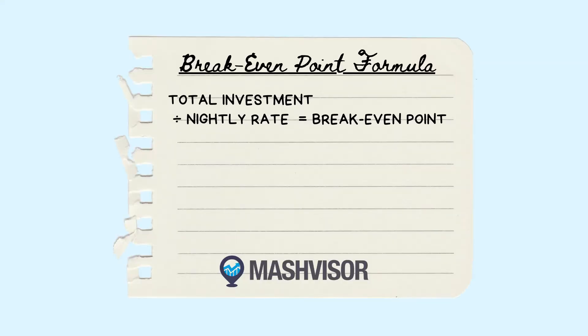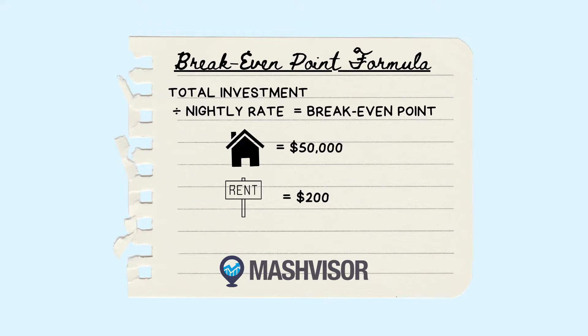To calculate your breakeven point, divide your total investment by the nightly rate you charge for your Airbnb rental. For example, if you've invested $50,000 into your property and you charge $200 per night, your breakeven point would be 250 days. That's $50,000 divided by $200 per night, which equals 250 days.